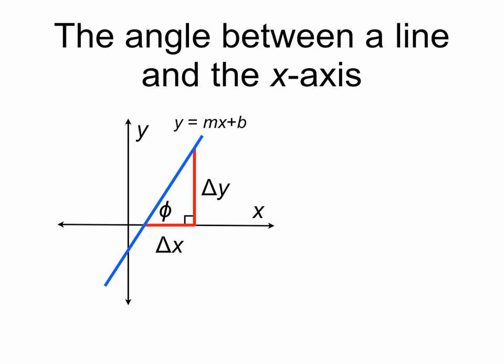So here's a triangle shown in red with legs delta x and delta y, which correspond to the change in x and the change in y along the line y equals mx plus b.